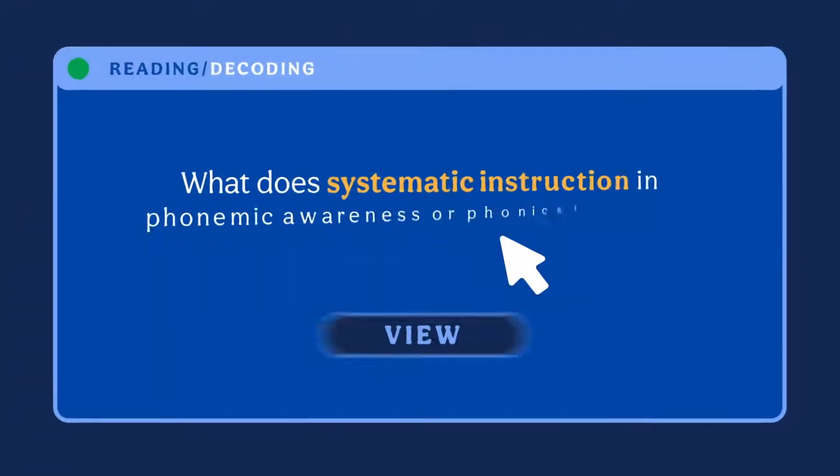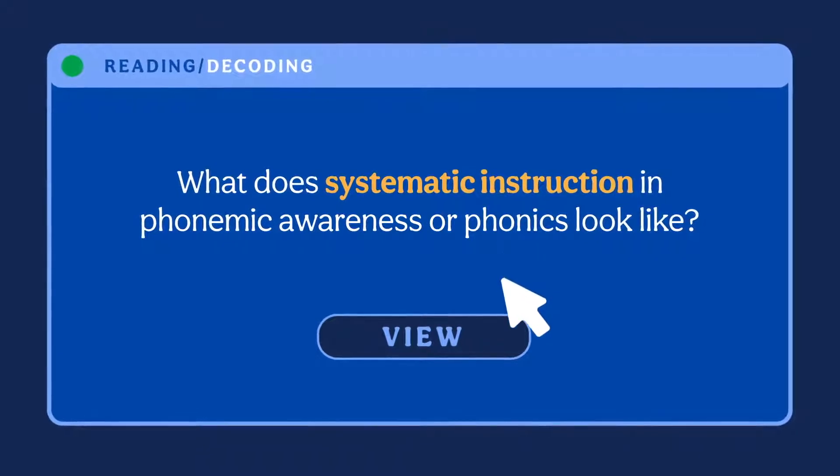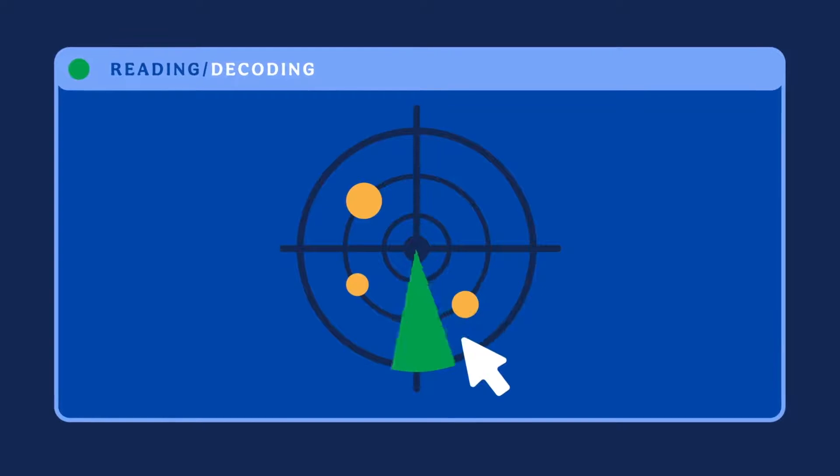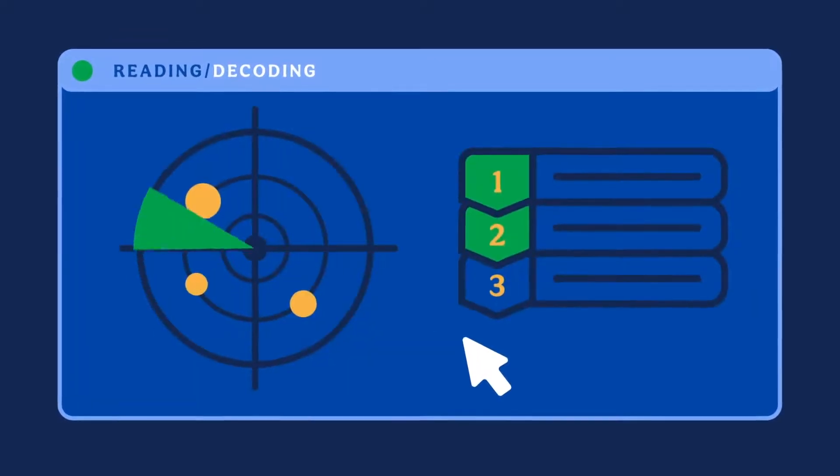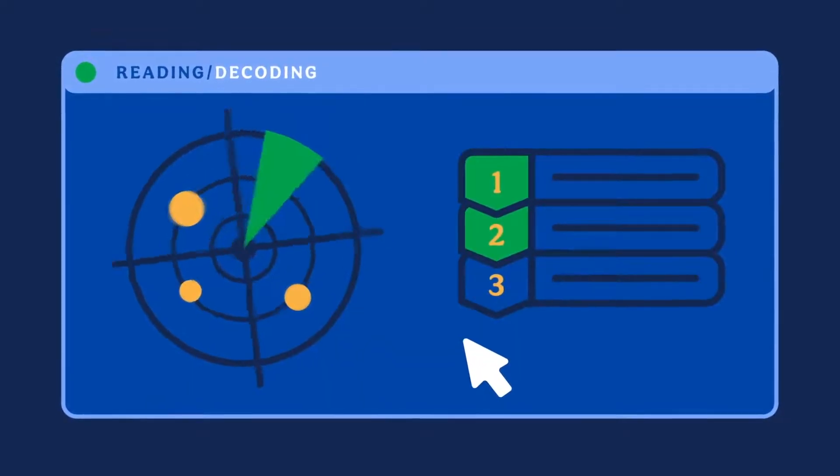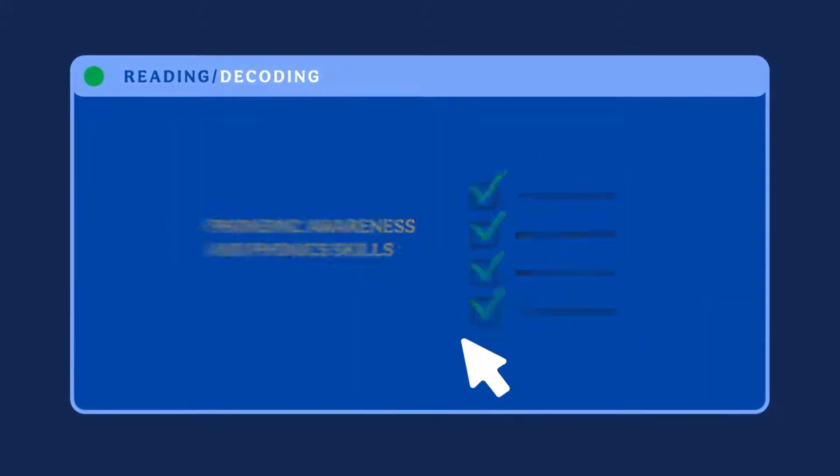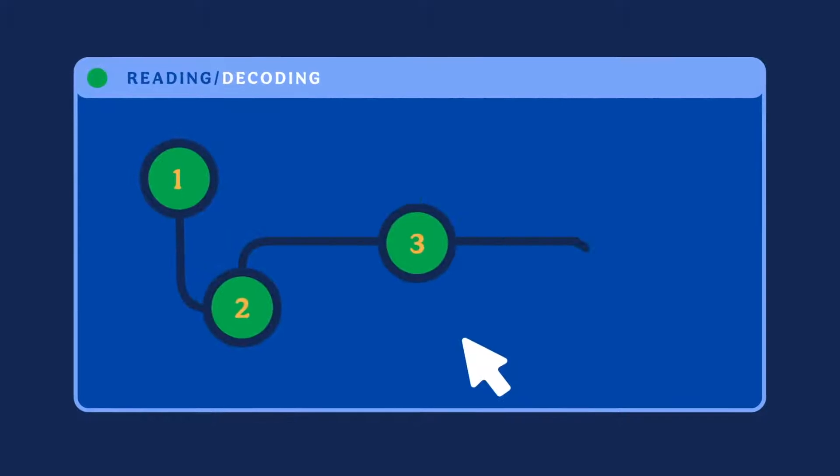What does systematic instruction in phonemic awareness or phonics look like? Systematic instruction involves using a scope and sequence to teach phonemic awareness and phonics. The scope and sequence should specify the specific skills that instruction should cover and the order in which skills should be taught.